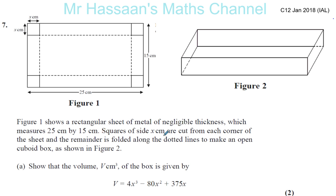My first request was question number 7 from C12, January 2008 IAL paper. It's a question about the applications of differentiation. Figure 1 shows a rectangular sheet of negligible thickness which measures 25 by 15 centimeters. Squares of side X centimeters are cut from each corner, and the remainder is folded along the dotted lines to make an open cuboid box, as shown in Figure 2. We have to show that the volume of the box is given by a particular formula.